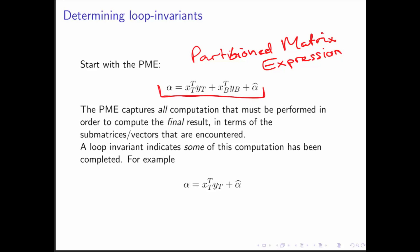This tells us everything that must be computed when we're done, but states it in terms of the partitioned vectors we naturally encounter as the algorithm executes. The contents of alpha as the loop executes can't be the complete result of the computation — only part of the total computation will have been performed. So the way we come up with a statement about what should be in alpha is we say it's not all of the computation, we scratch something out, and this leaves us with a partial result — that's the loop invariant.